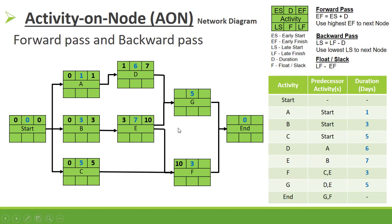For activity F, we have incoming early finishes of 10 and 5. In the forward pass we use the highest, which is 10: 10 + 3 = 13. For G, we have 7 and 10; the highest is 10: 10 + 5 = 15. At the End node, we have 15 and 13; the highest is 15: 15 + 0 = 15. The project duration is 15 days, the same as calculated in part 1 using the Activity on Arrow method.